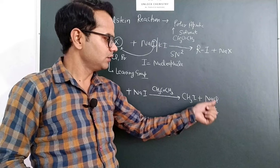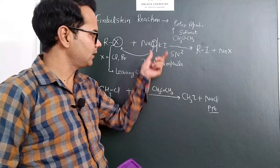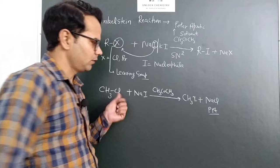It will form a precipitate. Actually, sodium iodide is soluble in acetone, but sodium chloride or sodium bromide, they are insoluble in acetone. So they will precipitate and they are removed.